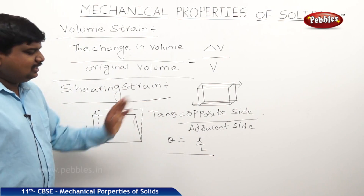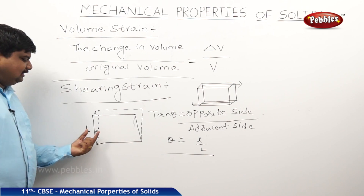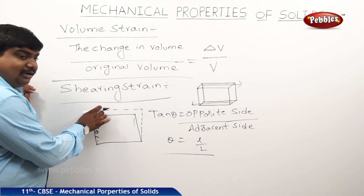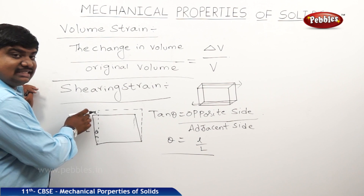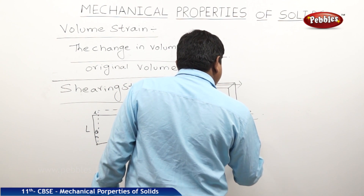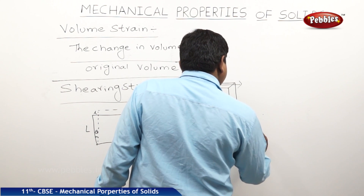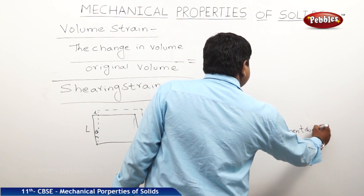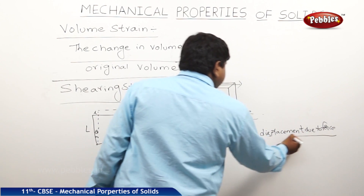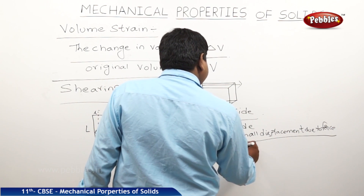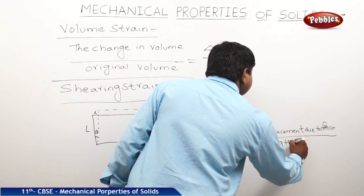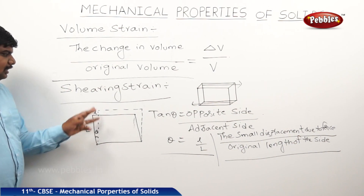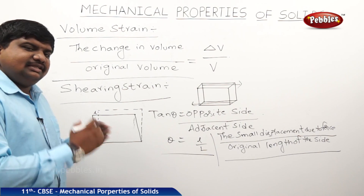For small angular displacement, tan theta becomes theta. The definition of shearing strain is: the small displacement due to the applied forces divided by the original length of the side. This displacement due to force by original length of the side is called shearing strain. Shearing means there is a change at any one point of the body.